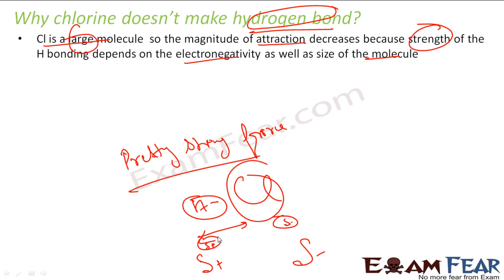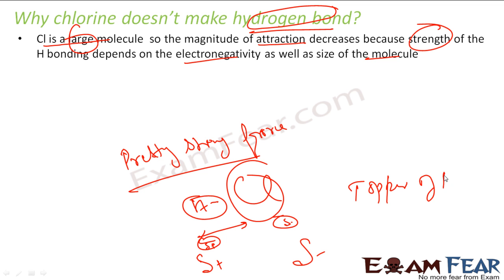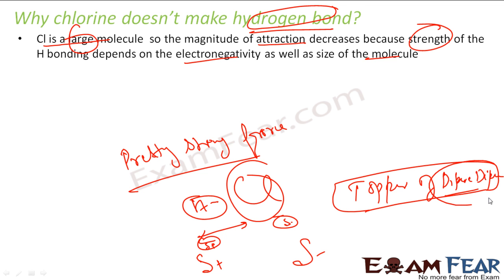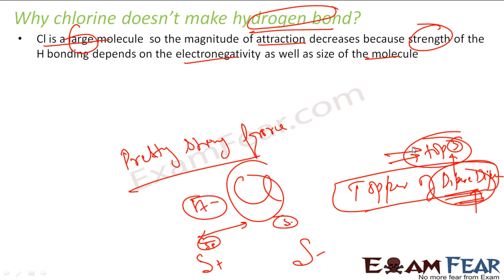You can think of hydrogen bonds as the 'top 3' of dipole-dipole forces. There are many molecules that have dipole-dipole forces, but only the top 3 — involving nitrogen, oxygen, and fluorine — are called hydrogen bonds. You can think of dipole-dipole force as the whole class, and the top 3 are your hydrogen bonds because they are really, really strong.